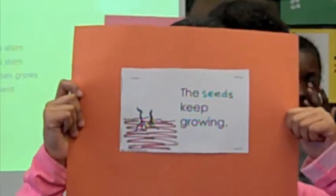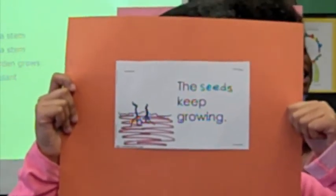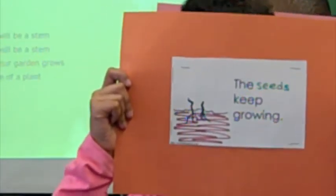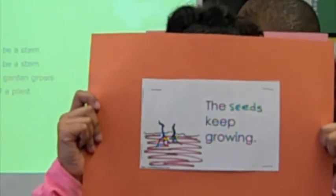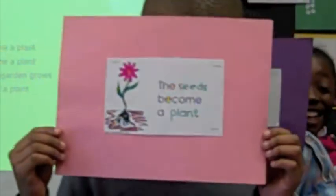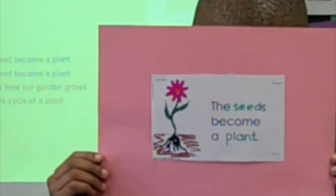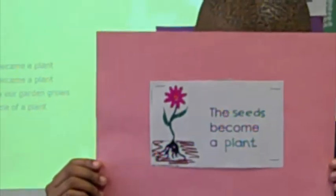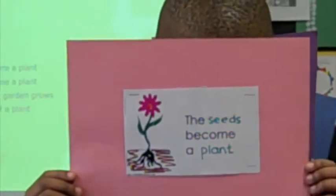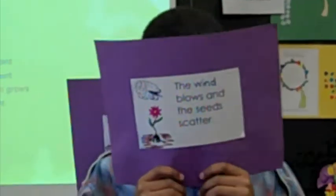Soon there will be a stem, soon there will be a stem. This is how our garden grows, the life cycle of a plant. The seed begins to plant, the seed begins to plant. This is how our garden grows, the life cycle of a plant.